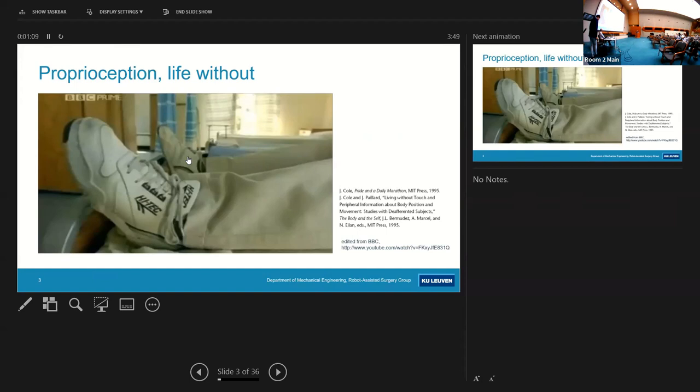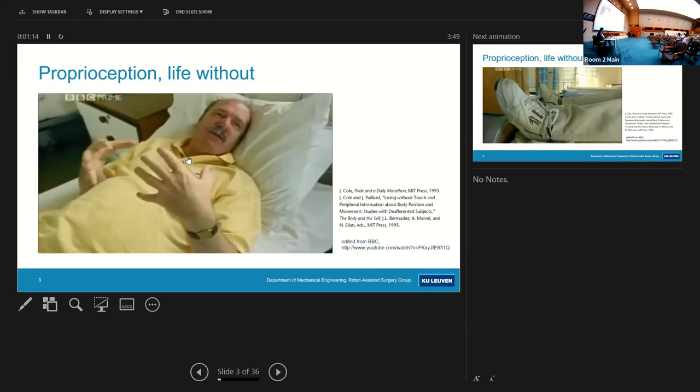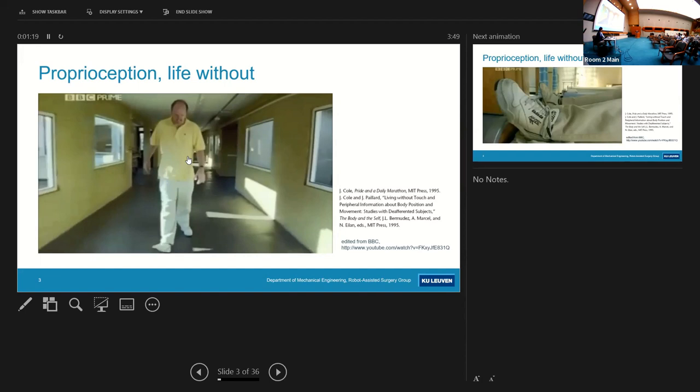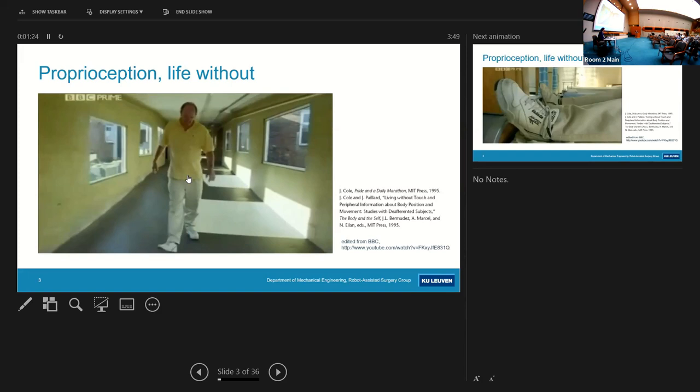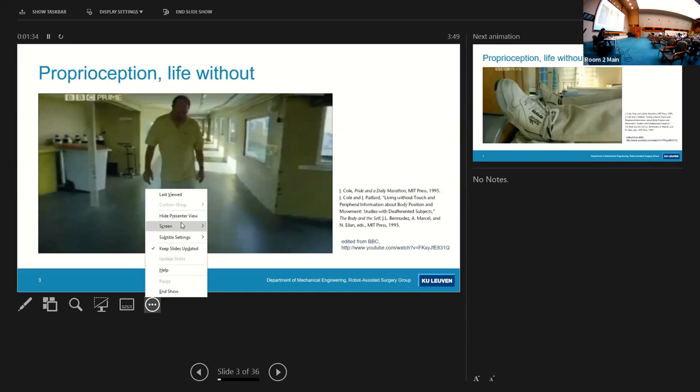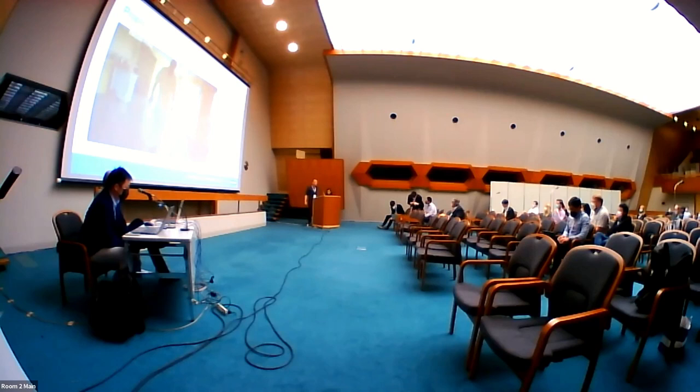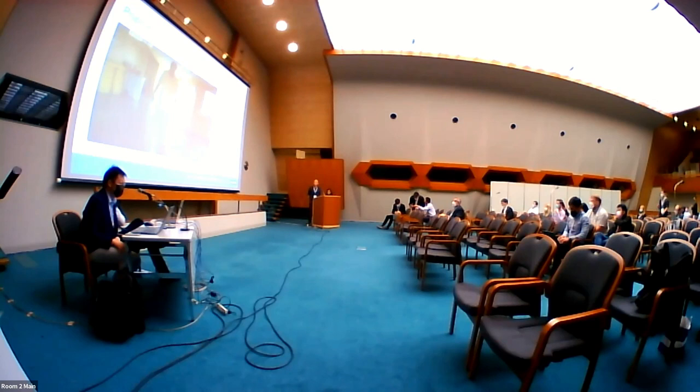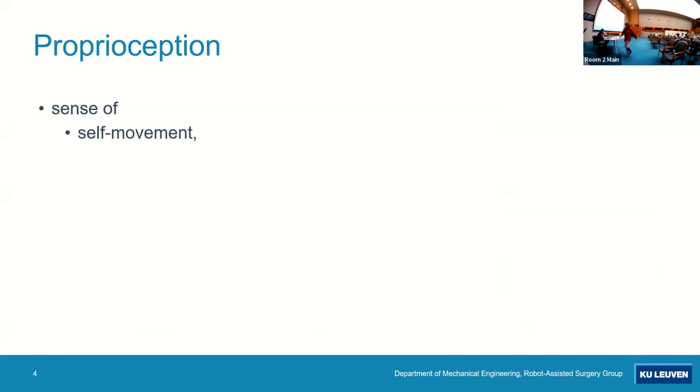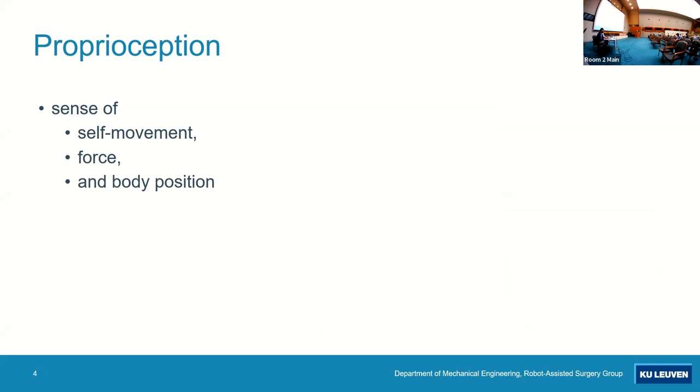Proprioception is very important. Most of us rely on it heavily. This is Ion Waterman from UK, who actually lost that sense. The only thing he can do to move is watch his feet when walking or his hands when manipulating. Proprioception is sense of self-movement, force, and body position.